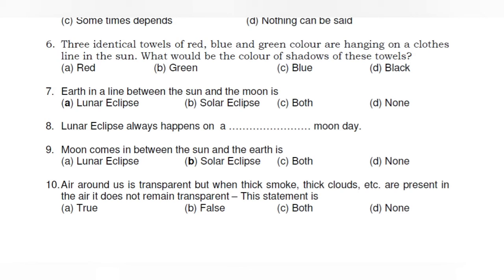Question number 9: The moon comes in between the sun and the earth — a different situation. When the moon comes in between the sun and the earth, its shadow might fall on some portion of the earth. The region of earth that falls in the shadow of the moon experiences a solar eclipse. This phenomenon is called the solar eclipse. A solar eclipse always happens on a new moon day. We can define a total solar eclipse when the moon completely blocks the sun, and a partial solar eclipse when the sun is only partially blocked.